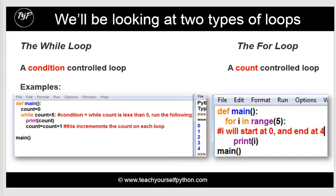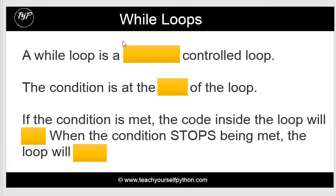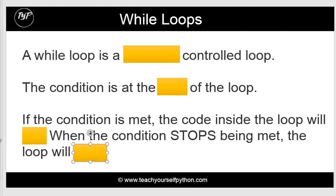We're going to be looking at two different types of loops: the while loop and the for loop. The while loop is a condition-controlled loop — it has a condition at the start, and if that condition is met, it will do whatever is inside the loop. The for loop is a count-controlled loop, meaning it has a known number of iterations. For instance, for i in range 5 means it starts at 0 and ends at 4. When the condition stops being met, the loop will stop or you can break out of it.